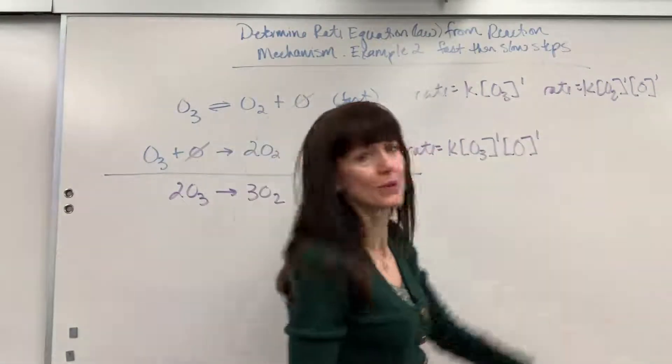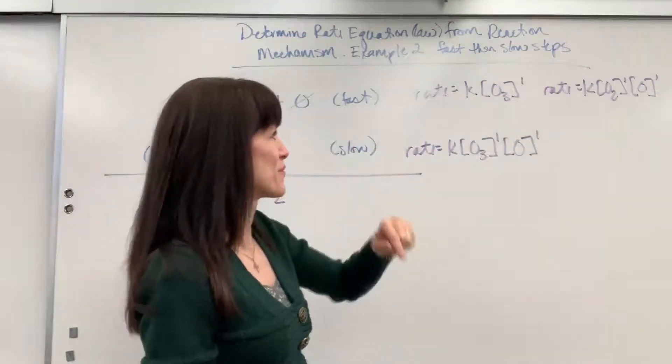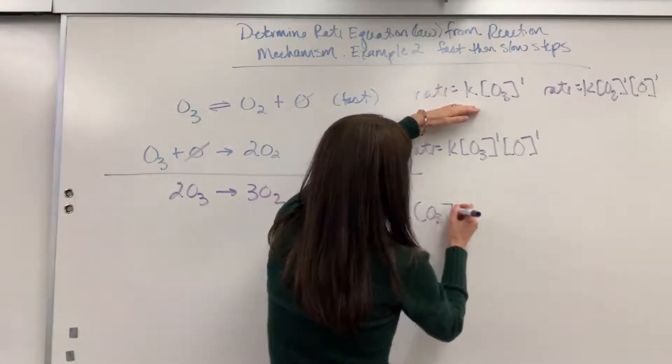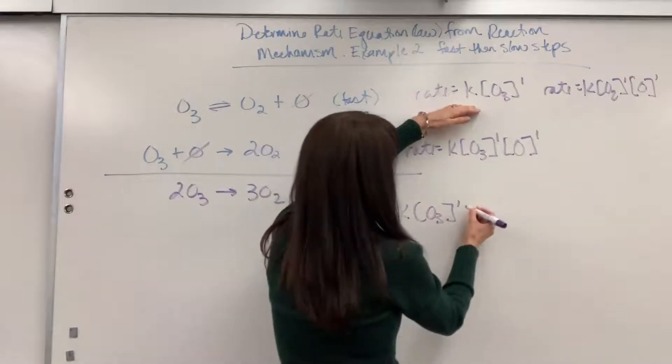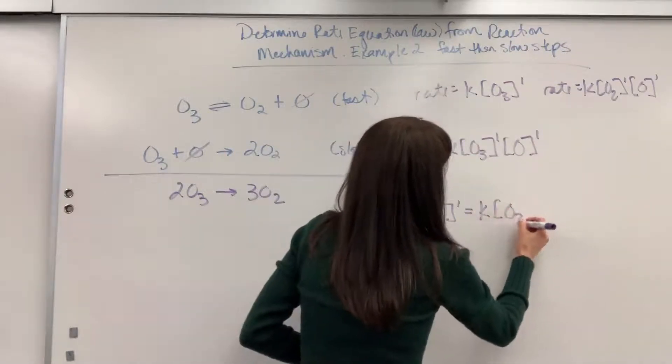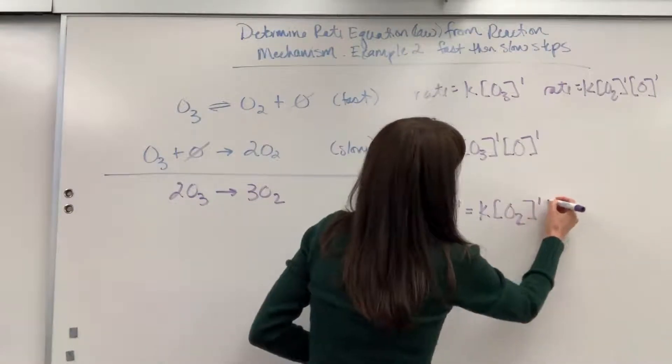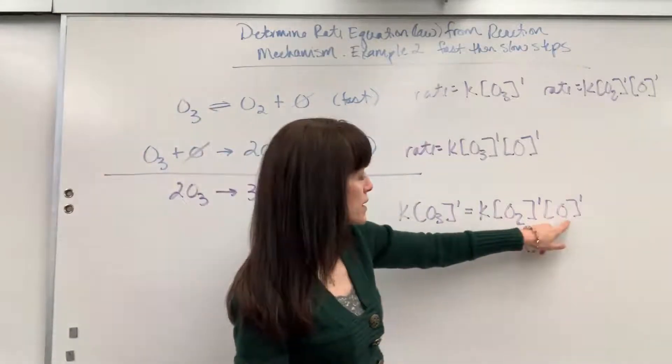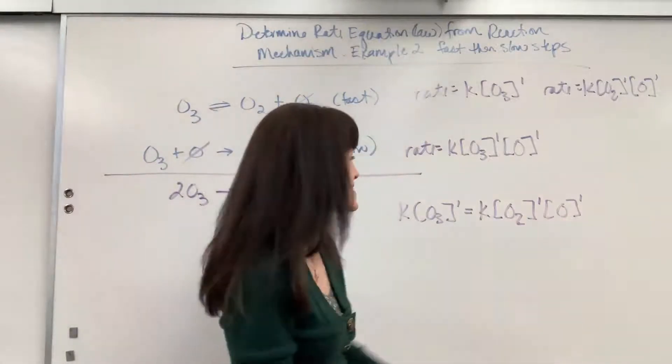So let's set these two equal to each other so we can solve for that intermediate. I'm going to have K times the concentration of O3 to the first order equals K times concentration of O2 times the O that's by itself.